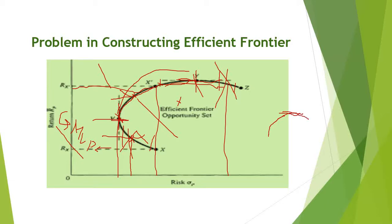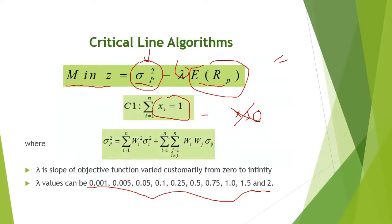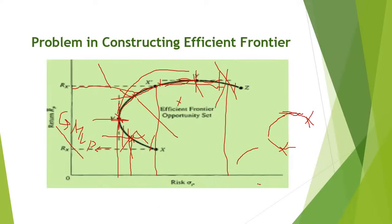Your efficient frontier runs from the global minimum variance point upward. When you try to build an efficient frontier you also get the lower inefficient points, but we only need the efficient frontier from the global minimum variance point onward. The slope at that point is zero, and beyond it the points are inefficient and not needed. CLA helps in identifying this efficient portion.